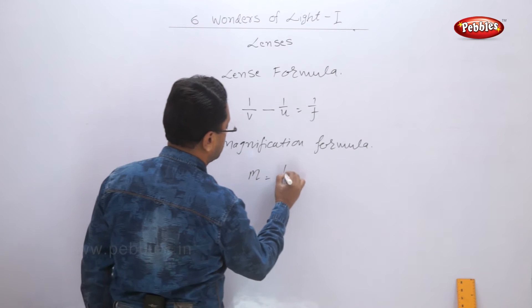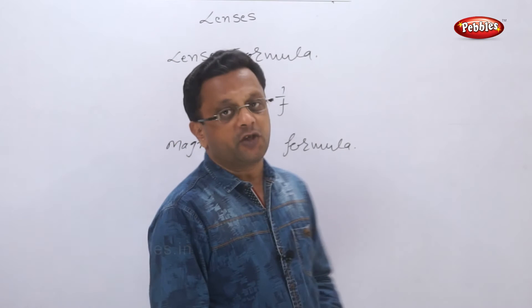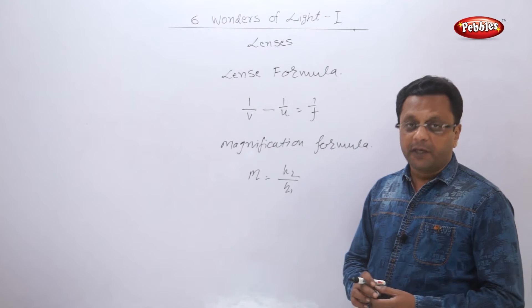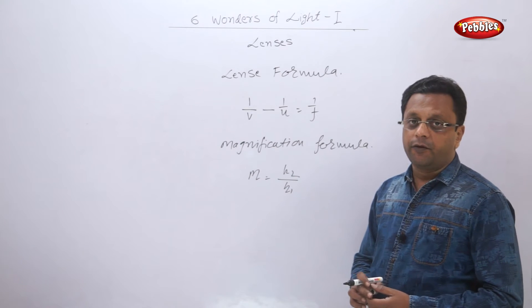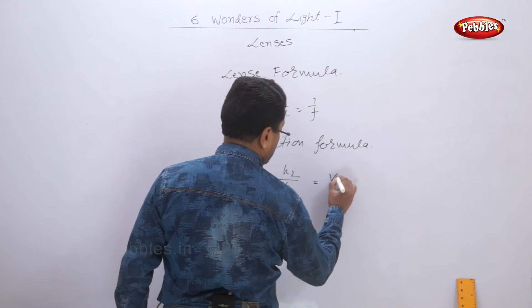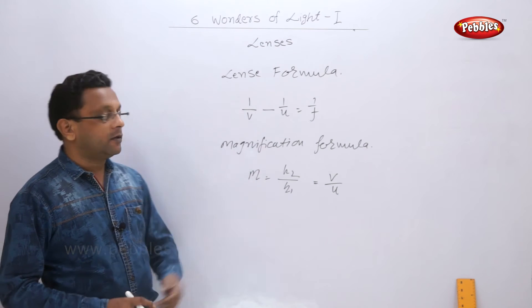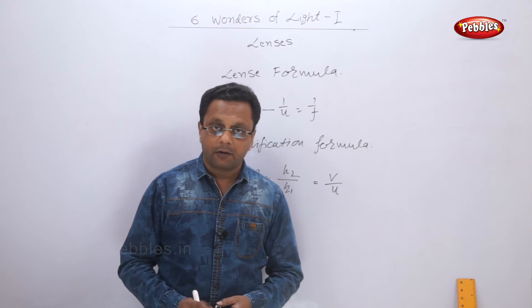M is equal to h2 upon h1. In case of mirrors it was minus v upon u, but here it is equal to plus v upon u. This is the only difference between lens and mirror.